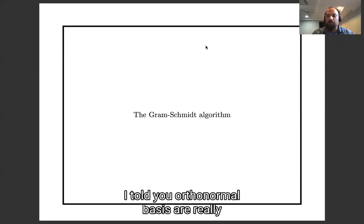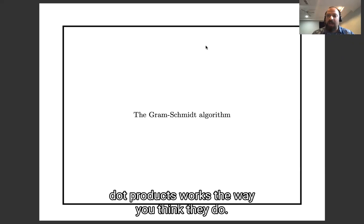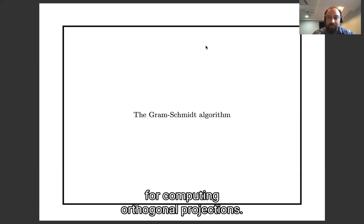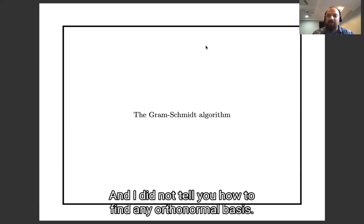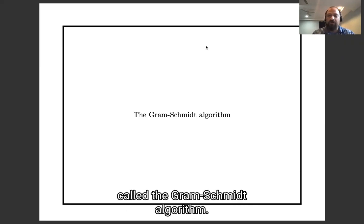I told you orthonormal bases are really good for computing geometric things because lengths and angles and dot products work the way you think they do. I told you that orthonormal bases are good for computing orthogonal projections, and I did not tell you how to find any orthonormal bases. So that's what we're going to do now, and we're going to do it using a method called the Gram-Schmidt algorithm.